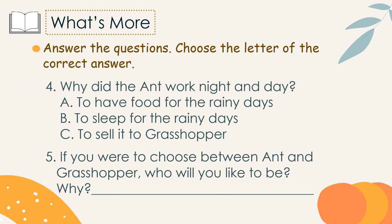For number four, why did the ant work night and day? To have food for the rainy days, to sleep for the rainy days, or to sell it to the grasshopper? The correct answer is to have food for the rainy days — so that in times of need, there is something to eat. It's not just about rainy days; it means having something set aside for when you need it.